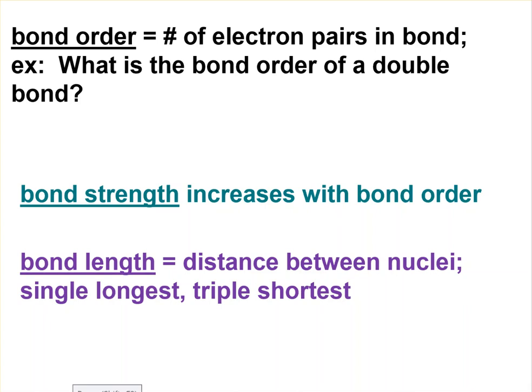Bond order is just another way of saying if a bond is single, double, or triple, and so a double bond has a bond order of two. Bond strength increases with bond order, which is what you would think. That just says that a triple bond is stronger than a single bond or a double bond.